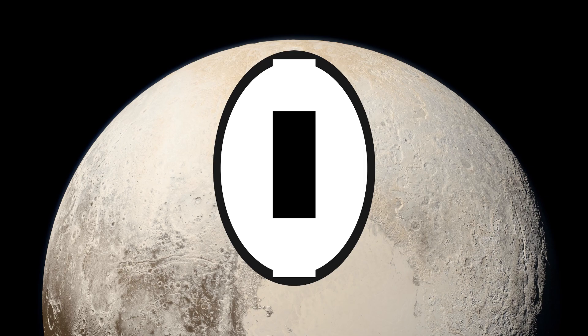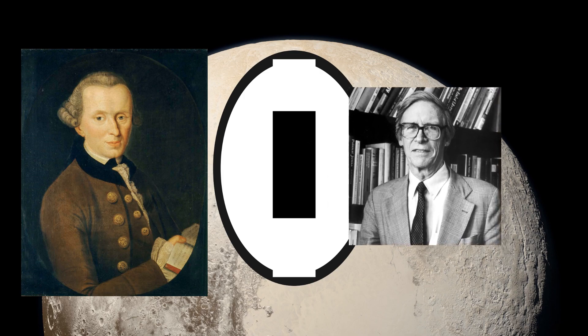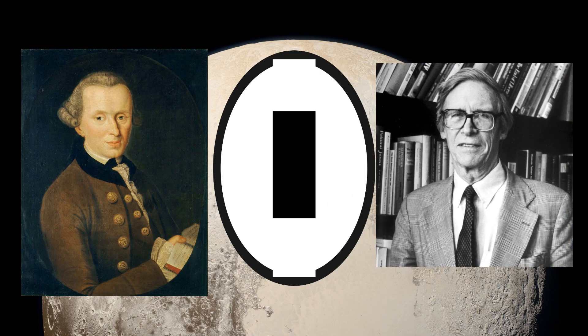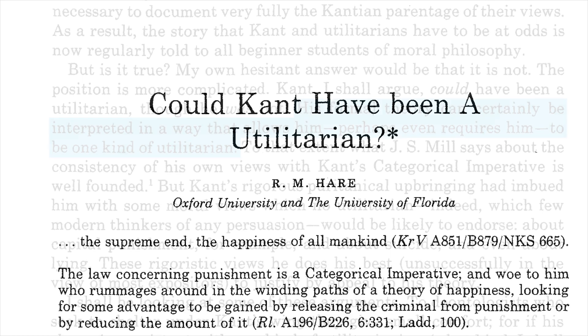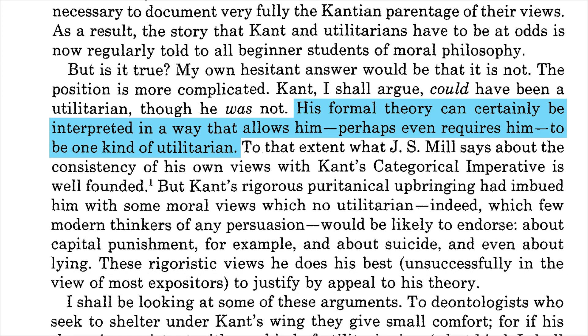One could say: you claim reason is the ingredient that shifts our optimization procedure towards wellbeing, but what about the moral theories of Kant or John Rawls? Surely reason is not missing in their thought — how come they don't propose a utilitarian theory of morality? An amusing way to defend our hypothesis from this objection is to claim that both Kant and Rawls were actually utilitarians. With regards to Immanuel Kant, there is precedent in the literature to support this claim. Richard Mervyn Hare tells us that Kant's formal theory can certainly be interpreted in a way that allows him — perhaps even requires him — to be one kind of utilitarian.